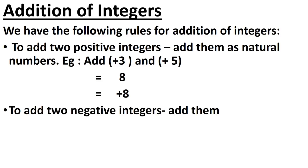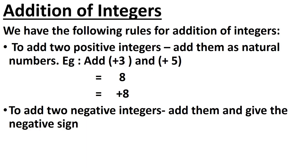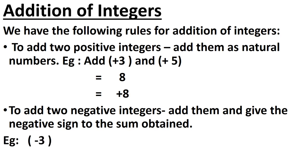To add 2 negative integers, add them and give the negative sign to the sum obtained. In this case also, we add the integers as natural numbers, and since we are adding negative integers, we give the negative sign to the answer. For example, minus 3 and minus 5 — both are negative integers. We add: 3 plus 5 equals 8, and give the negative sign, so the answer is minus 8.